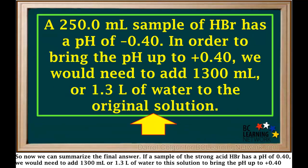So now we can summarize the final answer. If a sample of the strong acid HBr has a pH of negative 0.4, we would need to add 1300 milliliters, or 1.3 liters, of water to this solution to bring the pH up to positive 0.4.